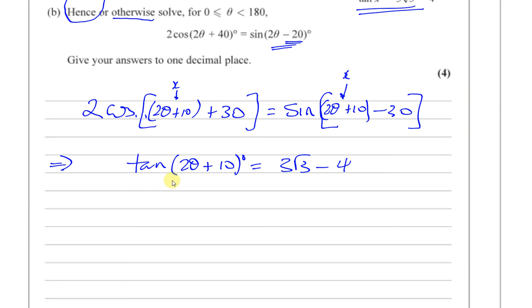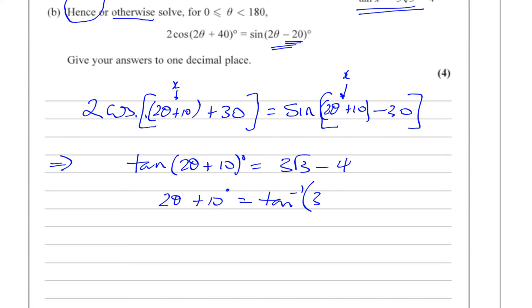Using the hence method, we've gone straight to tan(2θ + 10) = 3 root 3 - 4 without the long compound angle working. Taking the inverse tan of both sides with the calculator in degree mode: 2θ + 10 = arctan(3 root 3 - 4), which gives approximately 50.1039 degrees.